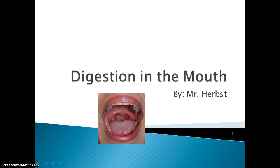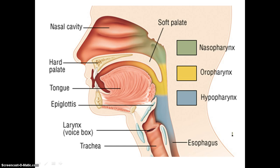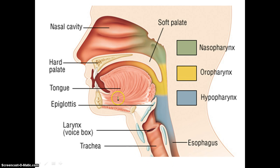Hi everyone, this is Mr. Herbst and today's focus is digestion that occurs in our mouth. Here I have a cross section of our mouth. We have our tongue, we have our nose up here, and we have our throat down in this region right here.